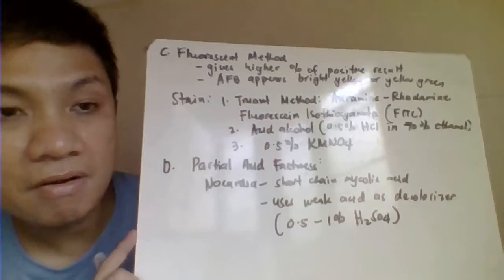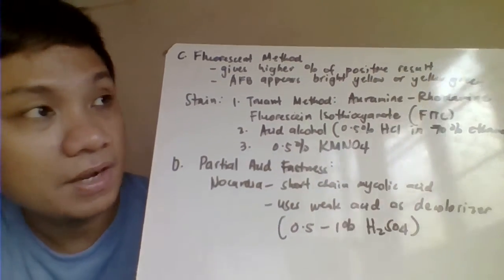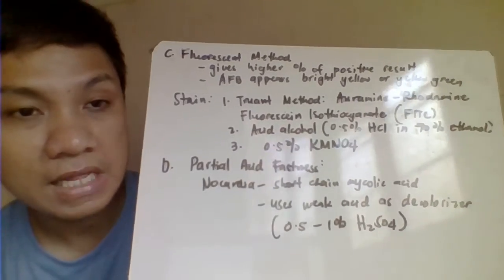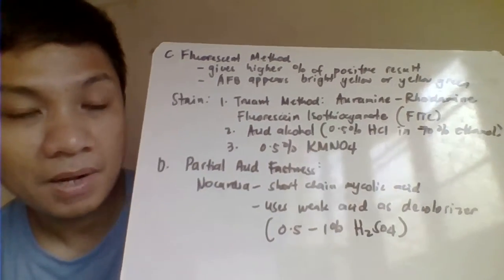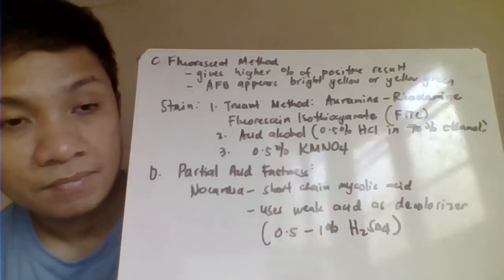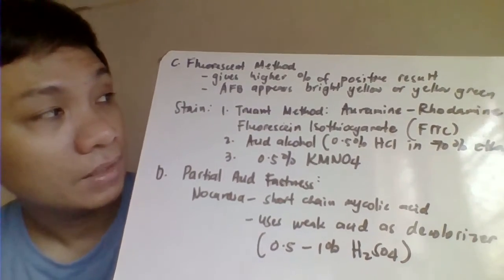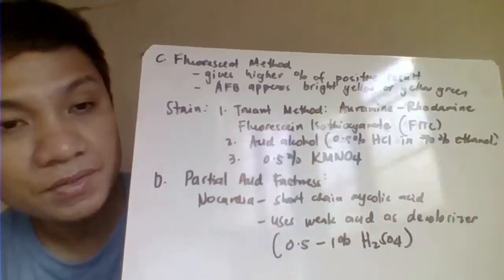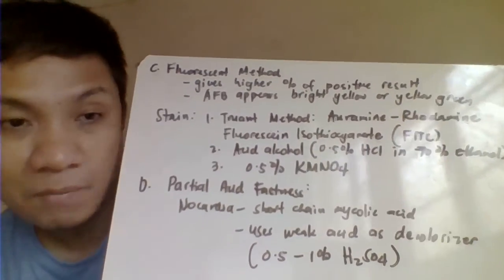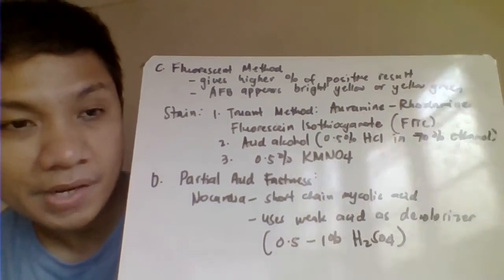Okay, another method here for the acid-fast staining, we have here your fluorescent method. Okay, the fluorescent method would yield here a higher positive results. So medyo sensitive ito compared with your Ziehl-Neelsen and your Kinyon method. Okay, so acid-fast bacilli appears to be refractile, yellow, or yellow-green. And very bright. Kasi this is a fluorescent staining.